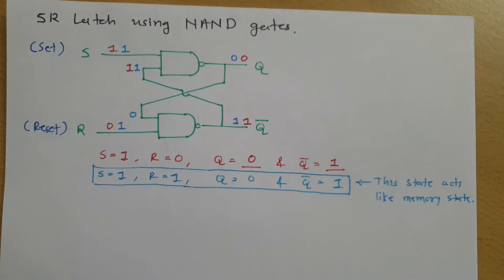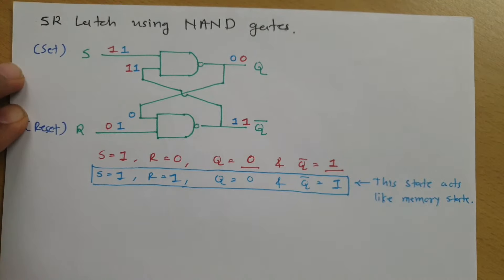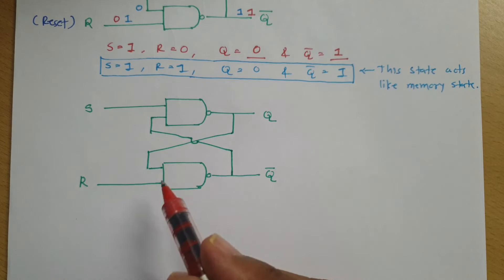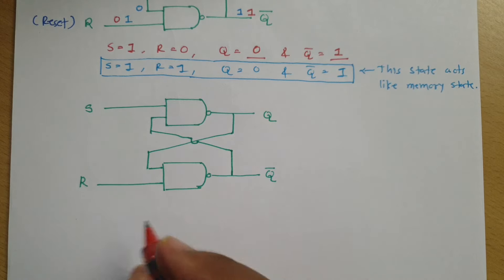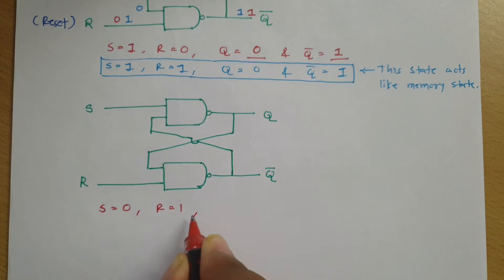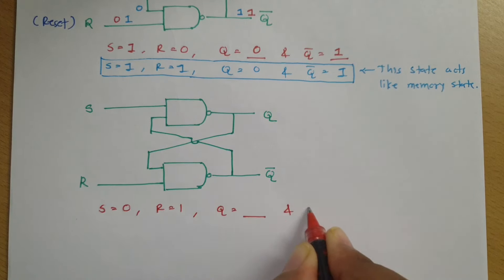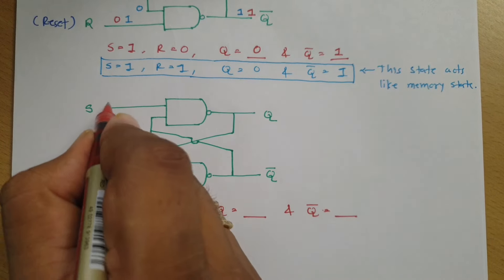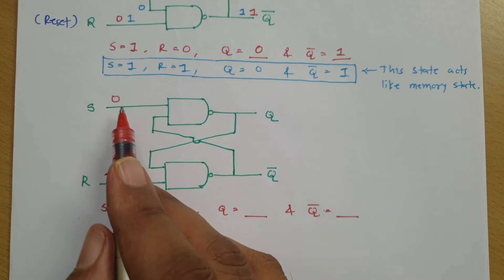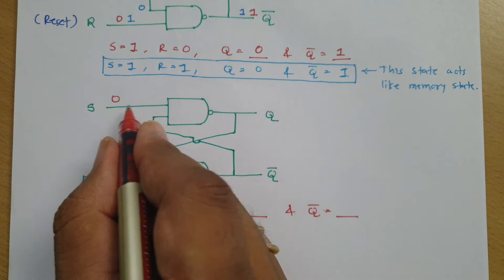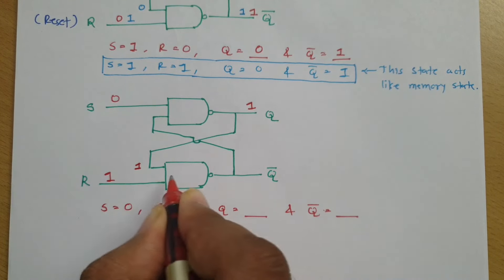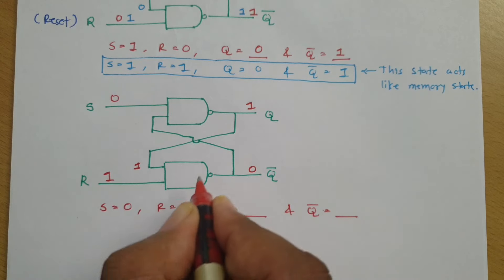Let me redraw this circuit again to identify other states. Now with SR Latch using NAND gate, let us have S equals 0 and R equals 1. If S equals 0 and R equals 1, we need to identify our output Q and Q-bar. As the basic working of a NAND gate states, if any input is 0 output will be 1. So this terminal is 0, so the NAND gate output will be 1 here, and this 1 comes in feedback. So this 1-1 makes the output 0 with this NAND gate.